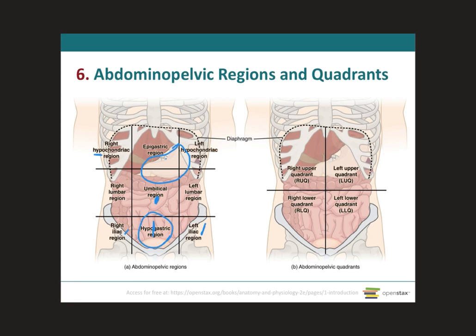Another subdivision of the abdominal pelvic cavity, which is mainly used for clinical purposes, is more simply divided into four quadrants. Quadrant means four, therefore it's easy to differentiate the quadrants from the regions.